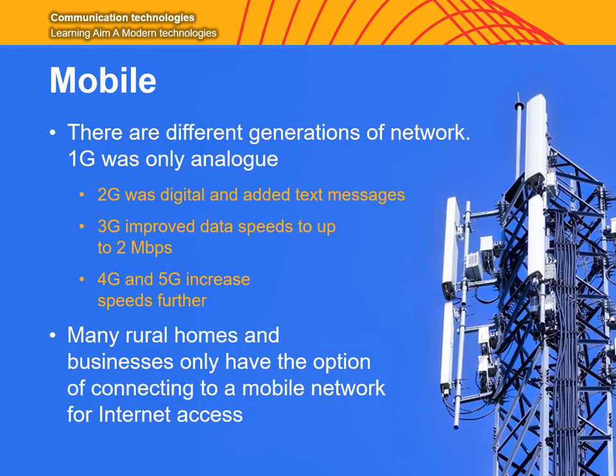This brings us on to mobile data. You'll have seen the 3G or 4G symbol on your smartphone when you're outside your home Wi-Fi network. Mobile data allows you to access the internet using your data plan, and going from 3G to 4G and in the future 5G will increase the speed of that connection. Many rural homes and businesses only have the option of connecting to a mobile network for internet access — for example, a business in the Lake District where there's no fibre or copper cable available.